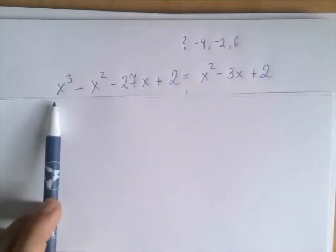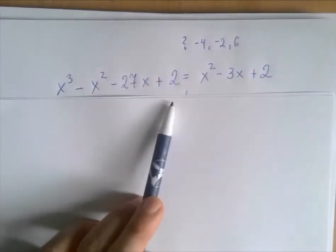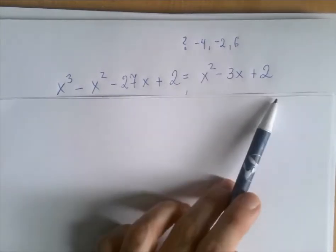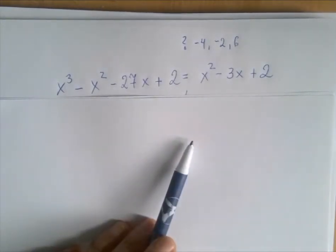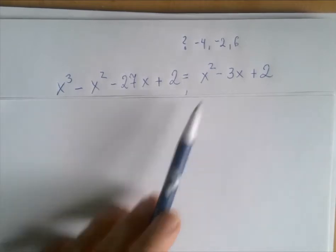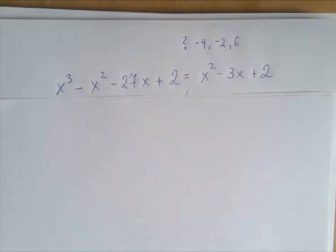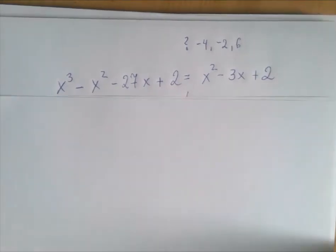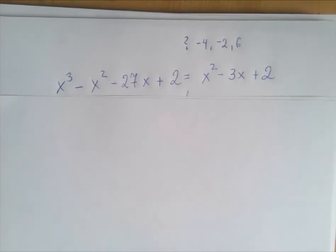Substitute negative 2 into the left-hand side. Substitute negative 2 into the right-hand side. Are they equal or not? If they're equal, negative 2 is a solution. If they're not, then negative 2 isn't a solution. And then repeat the whole thing with 6. So this is really the type of problem that's just evaluating algebraic expressions, but it is on steroids.